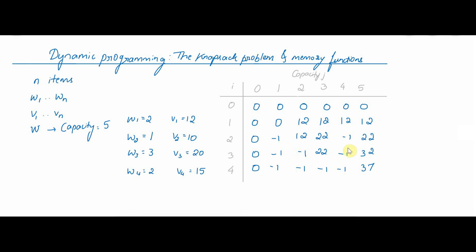This is how the table looks after performing the memory function knapsack algorithm. You can see that we did not calculate all the values of the table, just the ones that were necessary. The number of computations was reduced to 11.